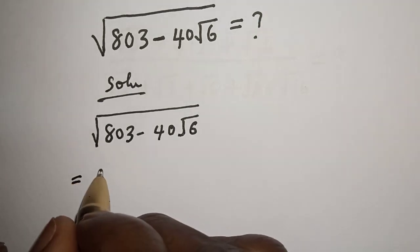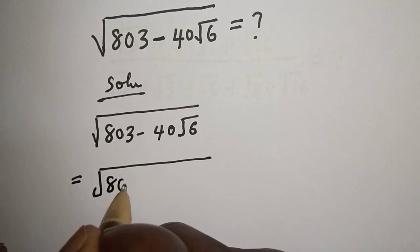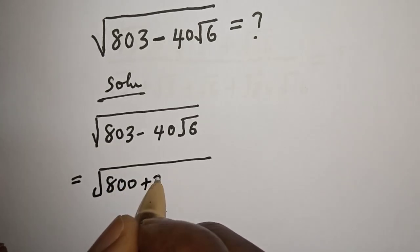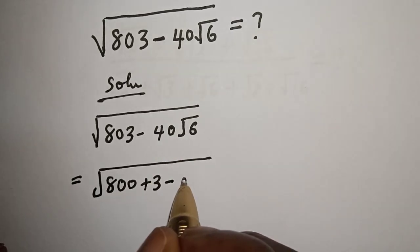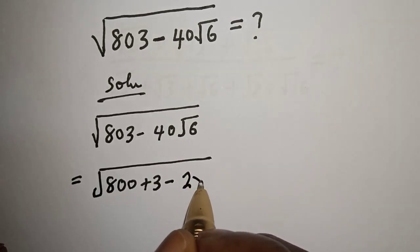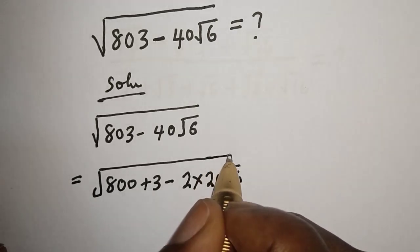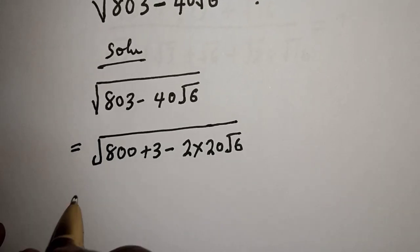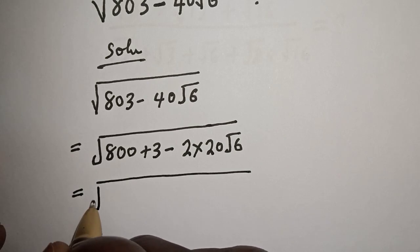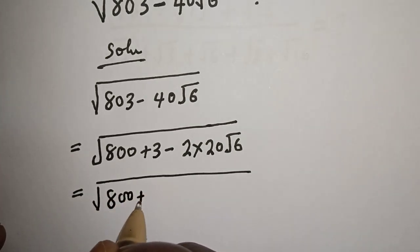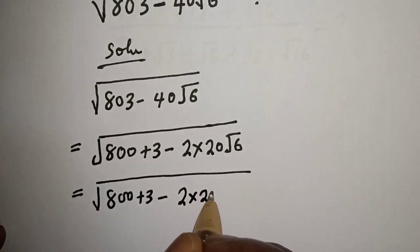Square root of 803 minus 40 root 6 is equal to square root of — 803 can be written as 800 plus 3, and 40 can be written as 2 multiplied by 20. So we have square root of 800 plus 3 minus 2 multiplied by 20.